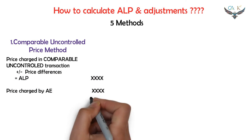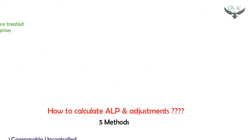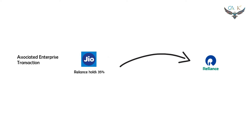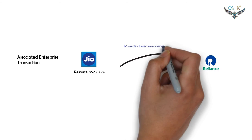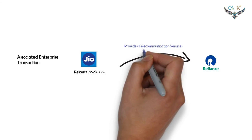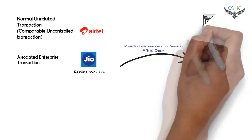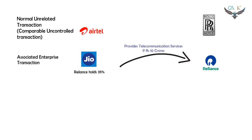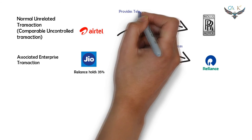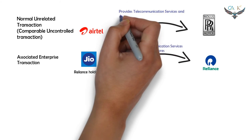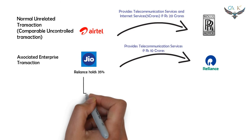The difference between the actual price charged by the associated enterprise and the arm's length price needs to be adjusted. For example: Jio company provides telecommunication services to Reliance company at Rs. 10 crores. There is a comparable uncontrolled transaction between Airtel and Rolls Royce company, where Airtel provides telecommunication services and internet services to Rolls Royce company at Rs. 20 crores.